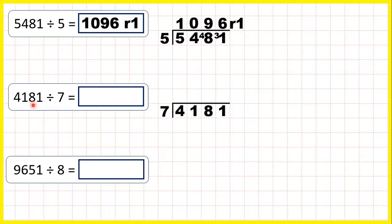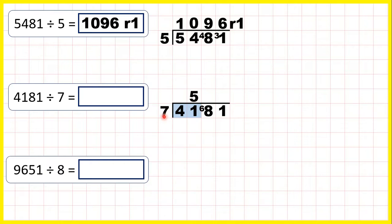Now we have 4,181 divided by 7. If we look at this first digit, 4 is less than 7, so when this happens we can take the first two digits together. Now 41 divided by 7 is 5, remainder 6. That's because 5 times 7 is 35, and then from 35 we need 6 more to get to 41.